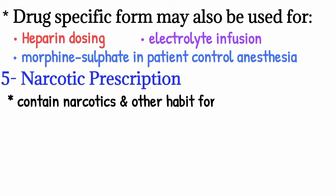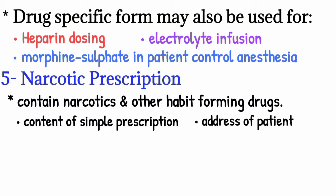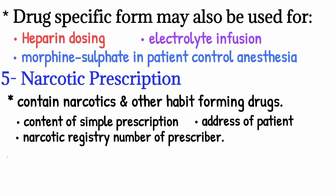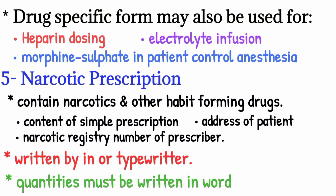Number five, narcotic prescriptions — these contain a narcotic substance or other habit-forming drugs. They must contain, in addition to the contents of a simple prescription, the address of the patient and the narcotic registry number of the prescriber. Such prescriptions should be written by ink or typewriter, and the quantities of the narcotic substance must be written in both words and numbers.